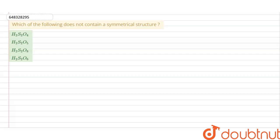have a question: which of the following does not contain a symmetrical structure? There are basically four molecules, out of which one does not have symmetry. So let's see which option does not have symmetry.